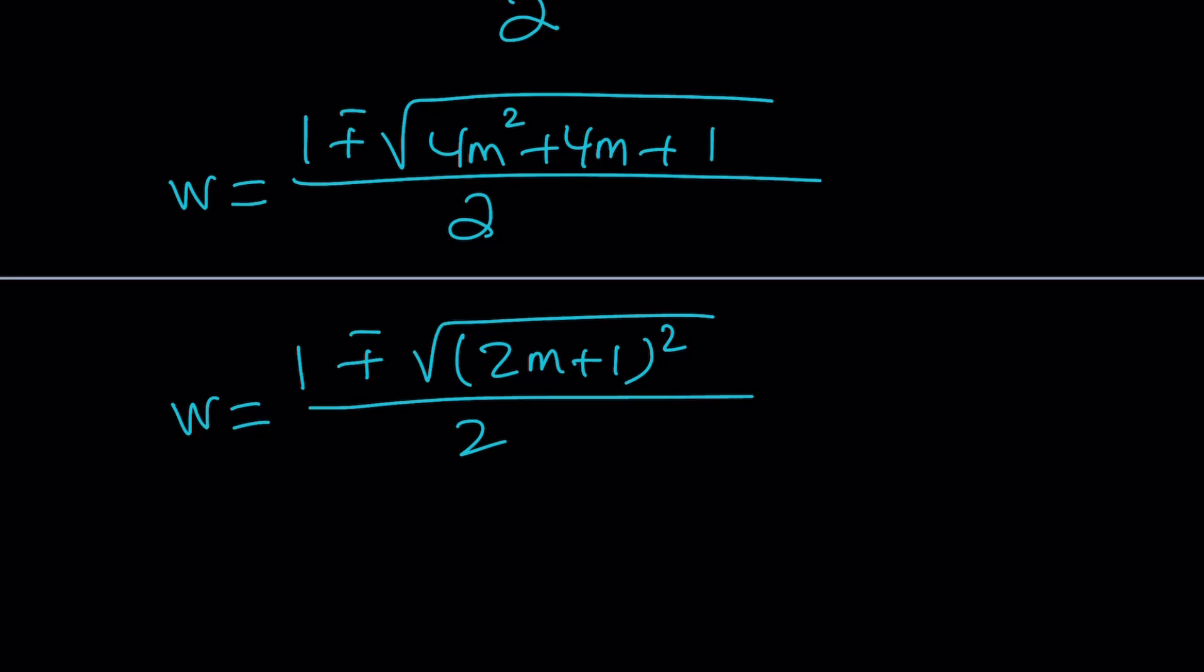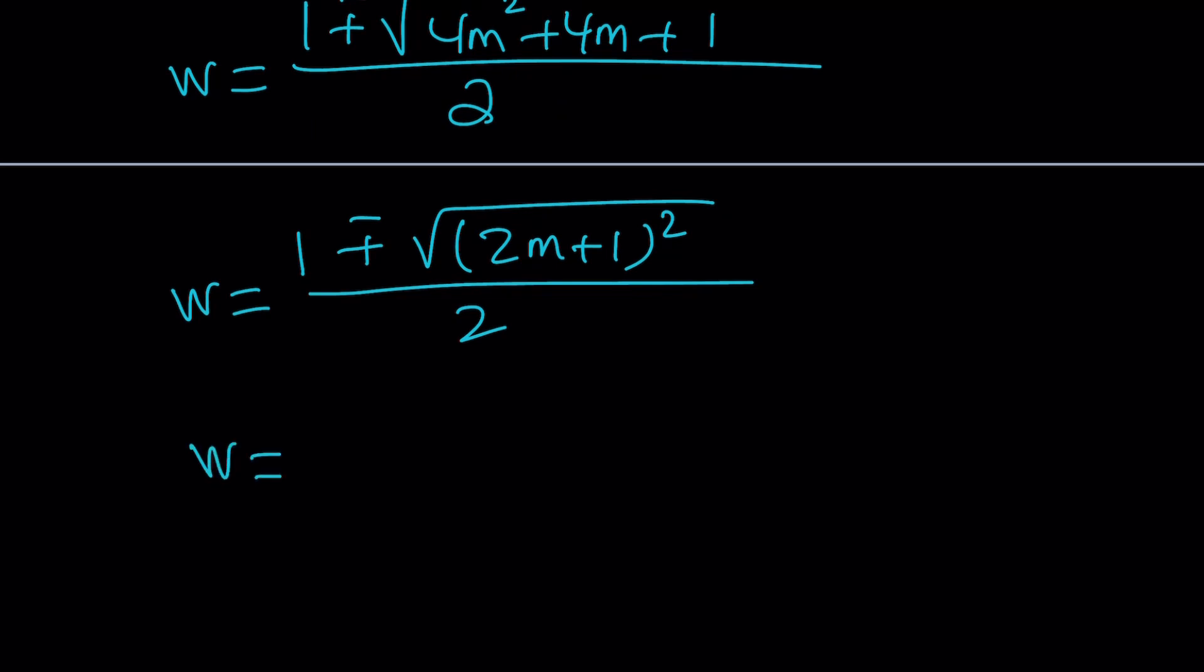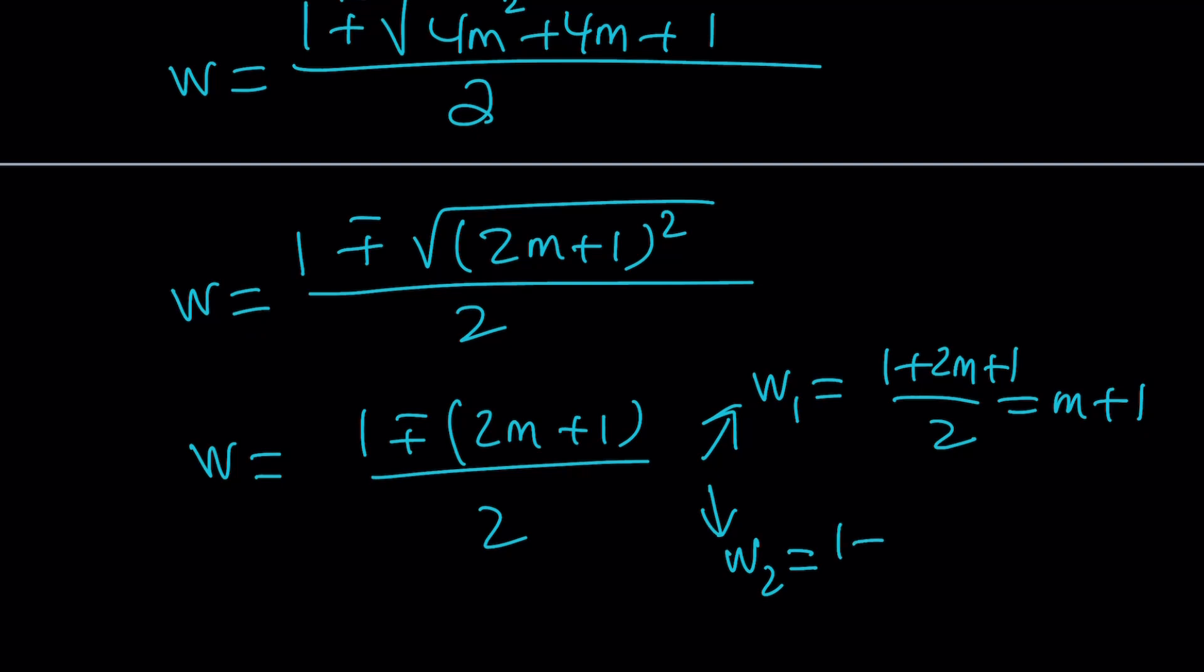We take the square root, and that gives us the plus minus signs that considers both solutions. Now we can split it up into two cases. W1 is going to be the plus sign, and if you simplify this you're going to get m plus one. The second root is just going to be obtained by one minus two m minus one divide by two, and the one is going to cancel out and you're going to end up with negative m. Interesting.